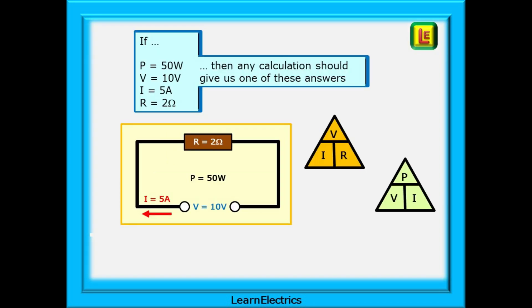For this first part we will use the same numbers, the same data for each calculation. Shown here are the four values for power, voltage, current and resistance. They will not change. If the calculations are correct, we shall always get the same answers, regardless of where we start.